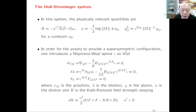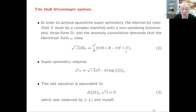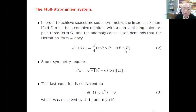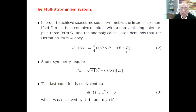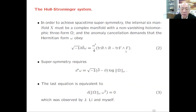In mathematics, the anomaly equation says: given the Hermitian form omega, it satisfies d-d-bar omega = alpha-prime times [Trace(R wedge R) - Trace(F wedge F)], where alpha-prime is the string tension constant. The left-hand side is d-d-bar omega, a 4-form. The right-hand side is also a 4-form—the second Chern character of the tangent bundle minus the second Chern character of the gauge bundle. Alpha-prime can be made small, but the equation is nonetheless non-trivial.